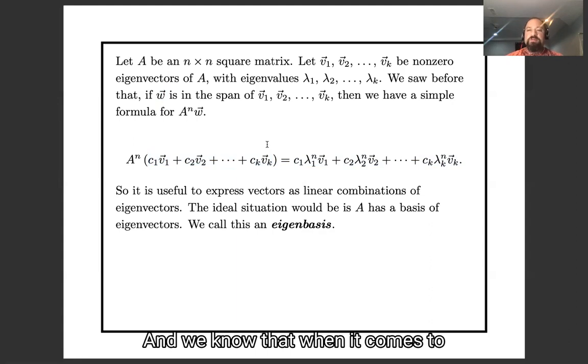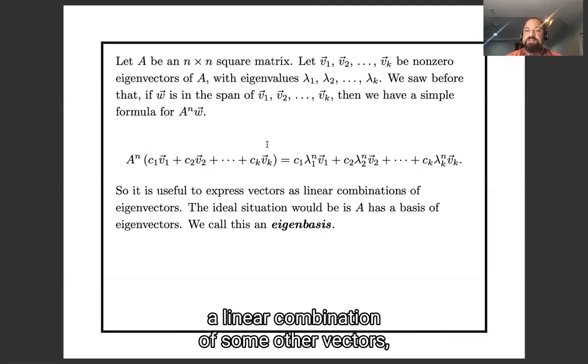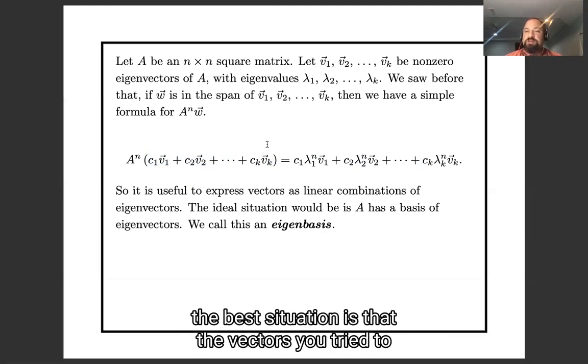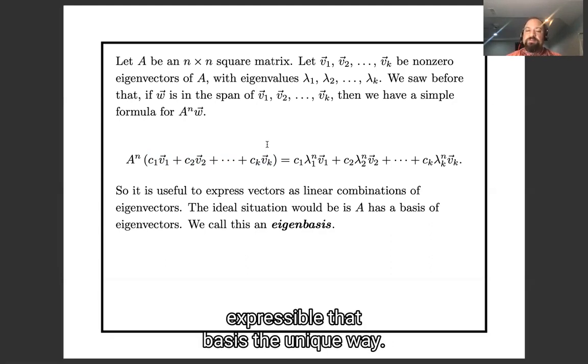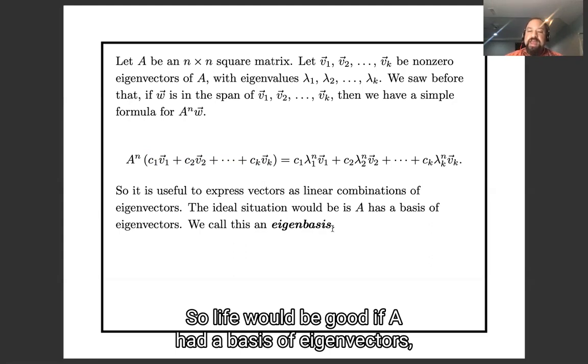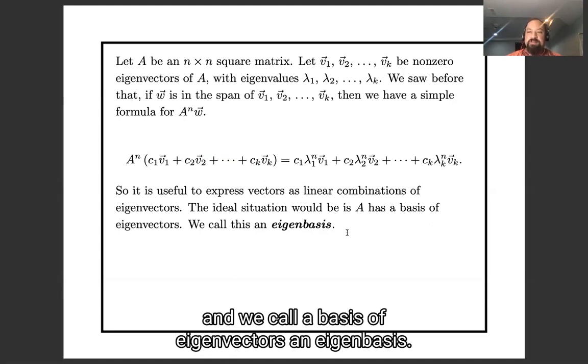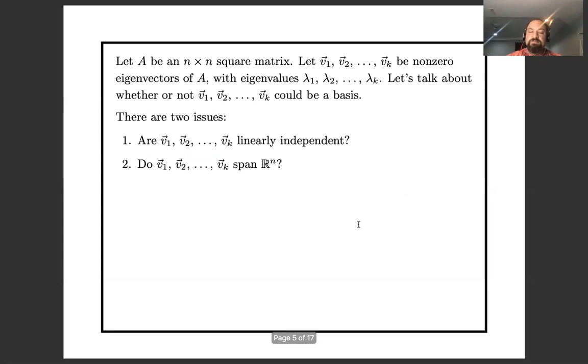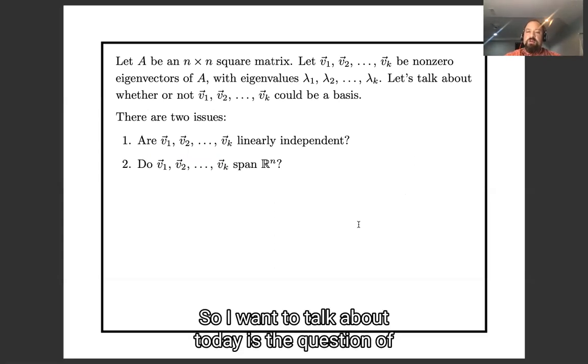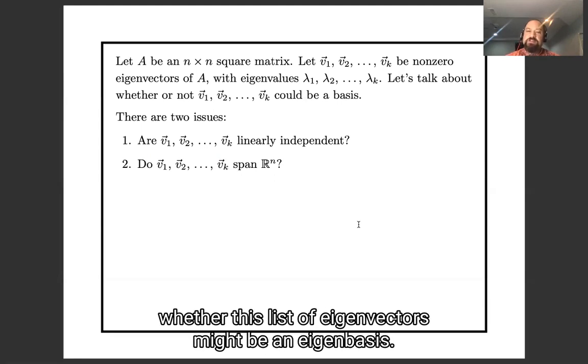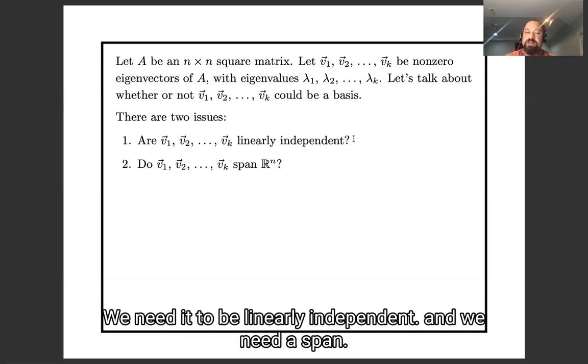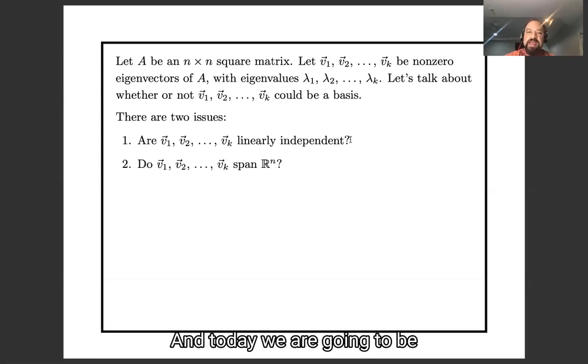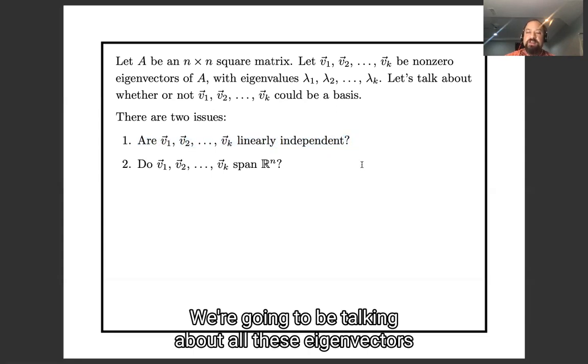So it's useful to be able to take some general vector w and express it as a linear combination of eigenvectors. And we know that when it comes to expressing some vector as a linear combination of some other vectors, the best situation is that the vectors you're trying to express in terms of be a basis. If you have a basis for R^n, then every vector in R^n is expressible in that basis in a unique way. So life would be good if A had a basis of eigenvectors. We call a basis of eigenvectors an eigenbasis. So what I want to talk about today is the question of whether this list of eigenvectors might be an eigenbasis. And remember, for something to be a basis we need two things: we need it to be linearly independent and we need it to span. And today we're going to be talking about this first issue, we're going to be talking about are these eigenvectors linearly independent?